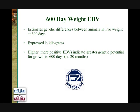The 600 day weight EBVs are therefore of importance to producers that are trying to turn animals off at around 20 to 24 months of age, such as in heavy grass fed or grain fed markets.